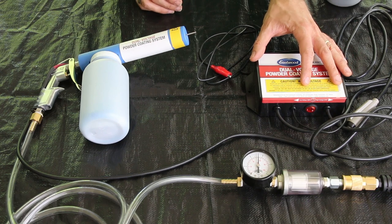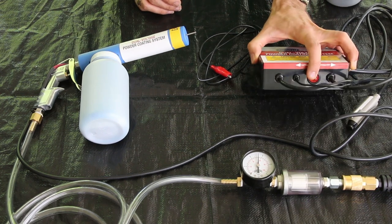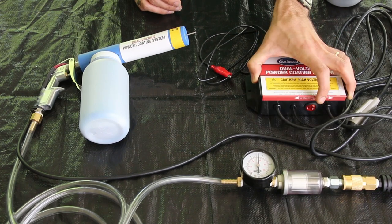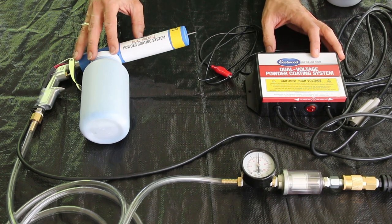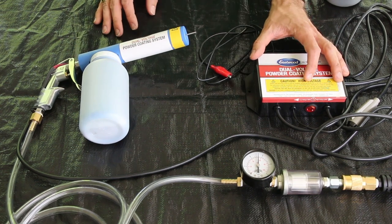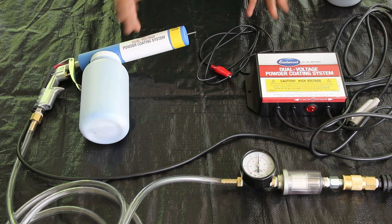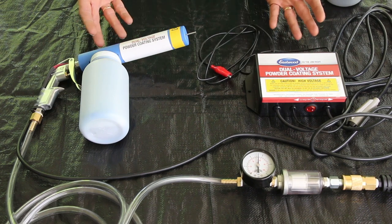I bought the dual voltage gun that has a switch for either 15,000 or 25,000 volts for applying the powder. The higher voltage can be useful on larger parts, but I use it almost exclusively on the lower voltage and it works fine.